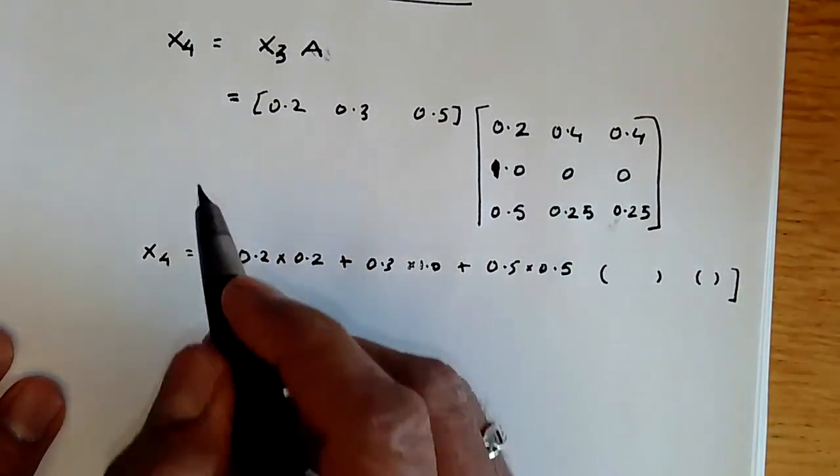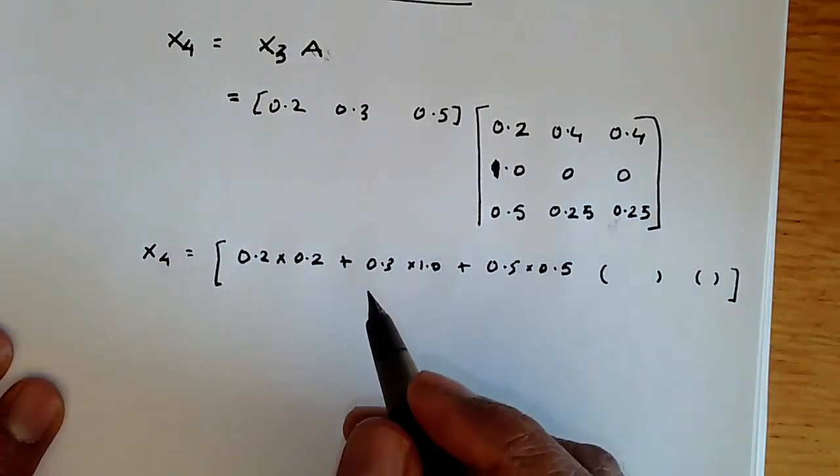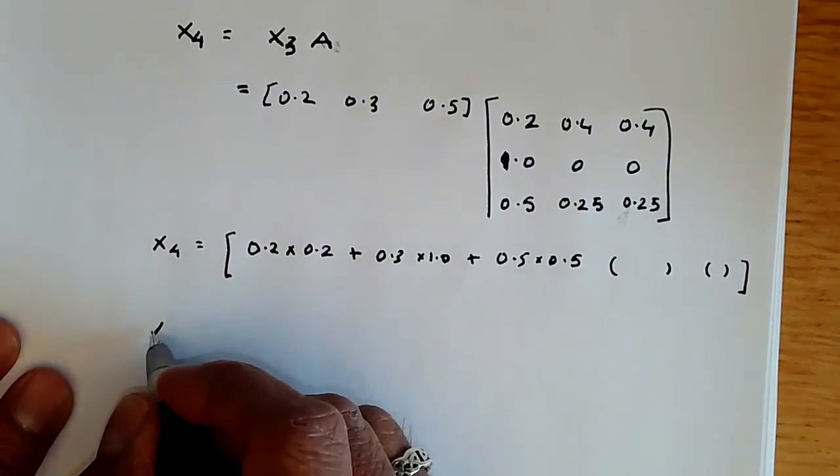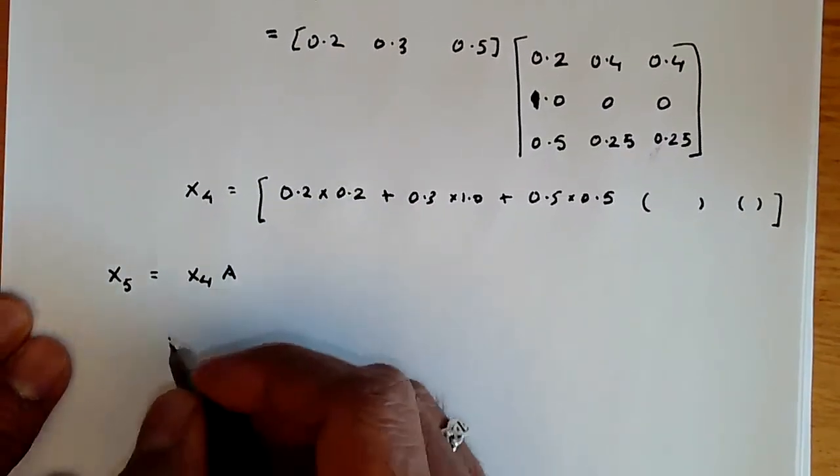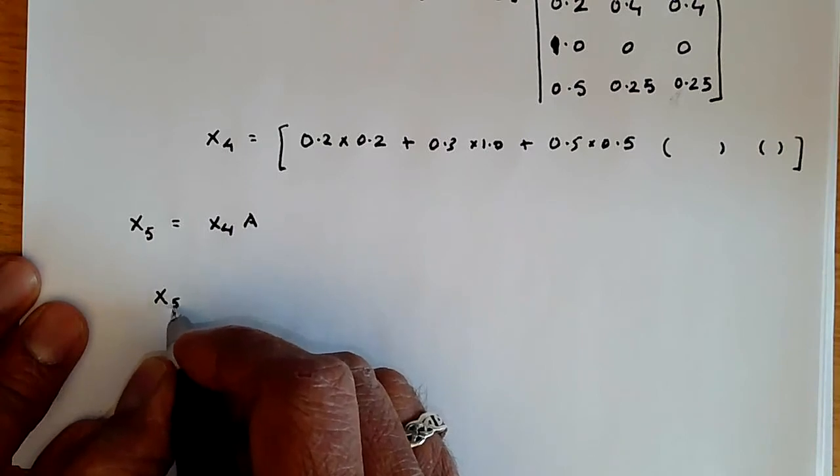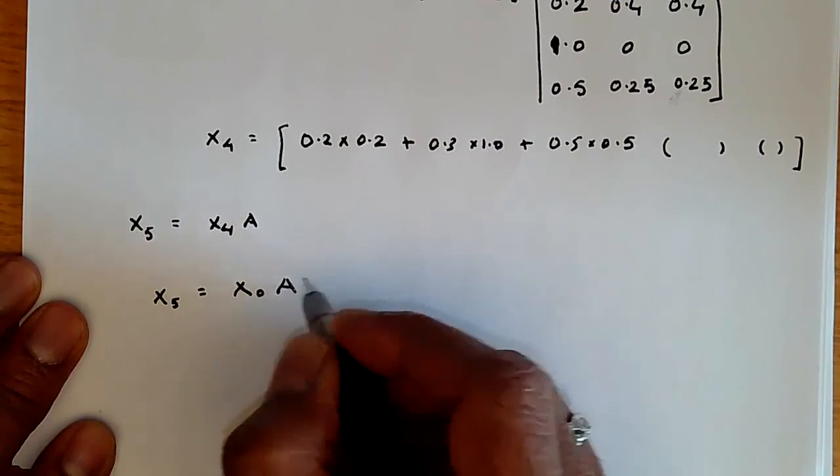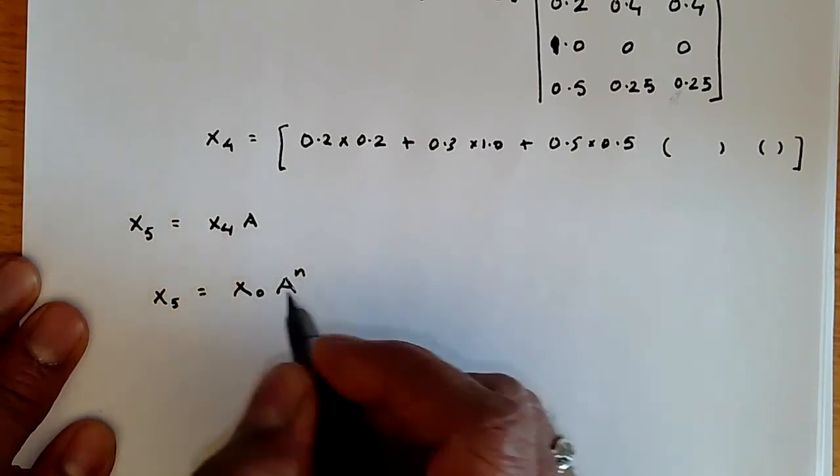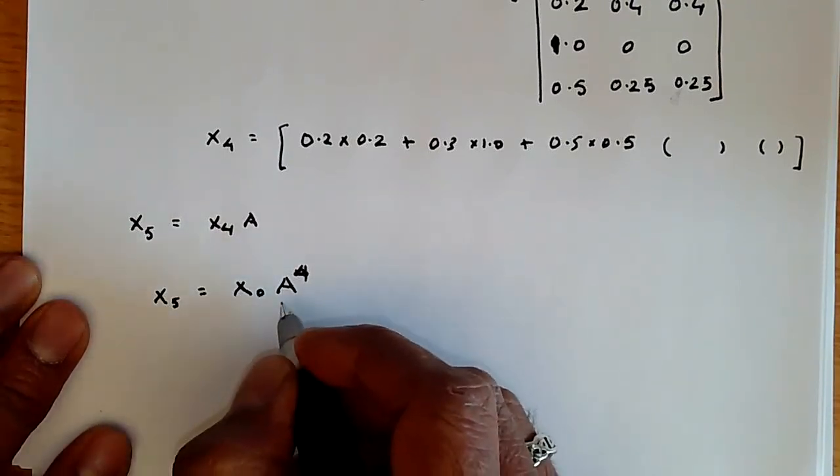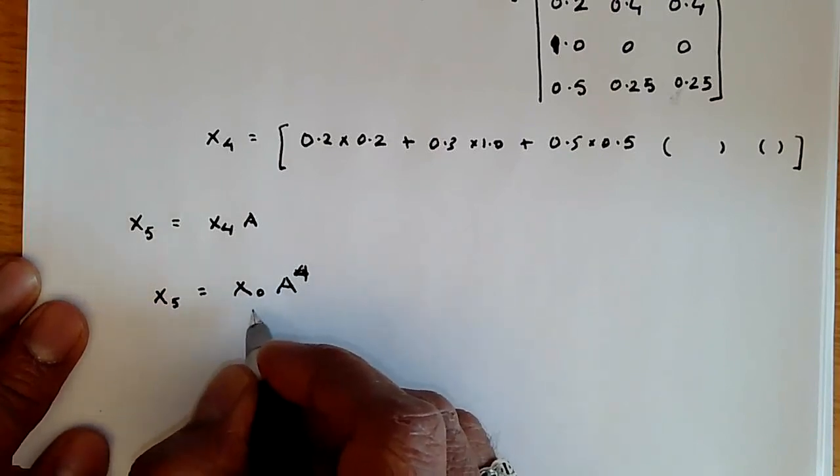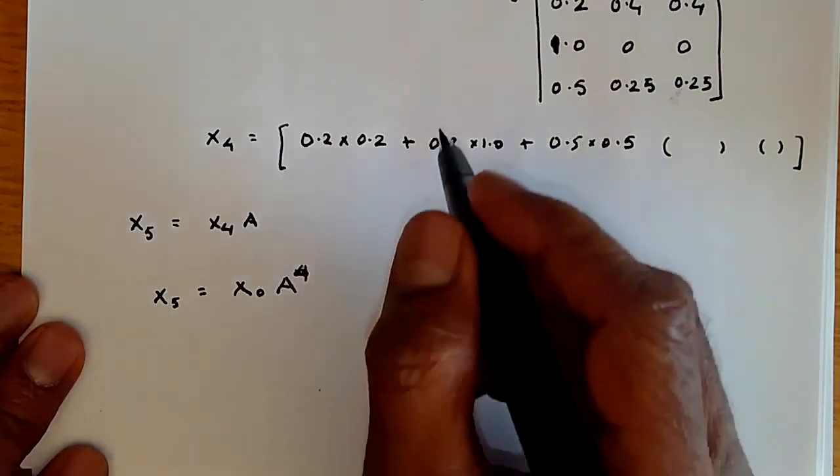So this row vector representation allows us to compute this, and then we can see that essentially if you take this X4 and we multiply that with A, then we're going to get X5, and so on. So these values of the different states, the random variables, can be obtained as basically X0, the initial value, and then A raised to the nth power. So the fourth power will give us X5. And in general, by just multiplying A over and over again with the initial value, we'll get all the values of the random variables through a fairly straightforward computation.